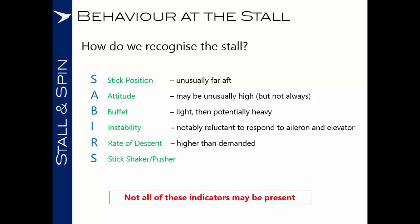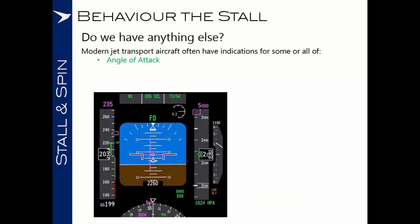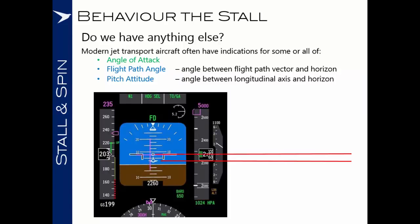SAVAIRS is a useful way of remembering behavior at the stall, but not all of these indicators may be present on your aircraft or in the situation you find yourself. Modern jet transport aircraft often have additional indicators. You may have an angle of attack gauge marked with a warning at the critical angle of attack. You may have something demonstrating your flight path angle — the angle between your flight path vector and the horizon — and you will almost certainly have something showing pitch attitude, the angle between the longitudinal axis and the horizon.